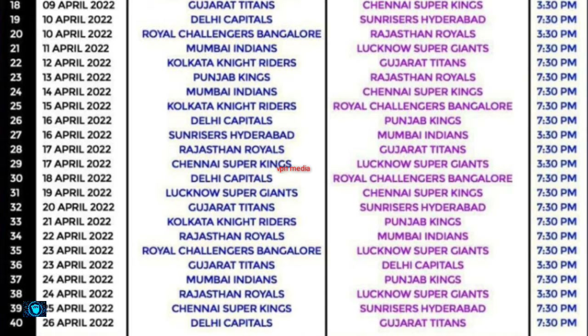April 23rd: Royal Challengers Bengaluru vs Lucknow Super Giants. April 23rd: Gujarat Titans vs Delhi Capitals. April 24th: Mumbai Indians vs Punjab Kings. April 24th: Rajasthan Royals vs Lucknow Super Giants. April 25th: Chennai Super Kings vs Sunrisers Hyderabad.